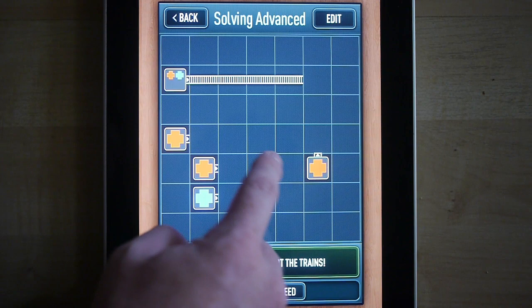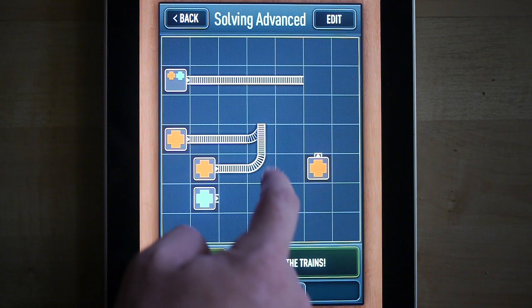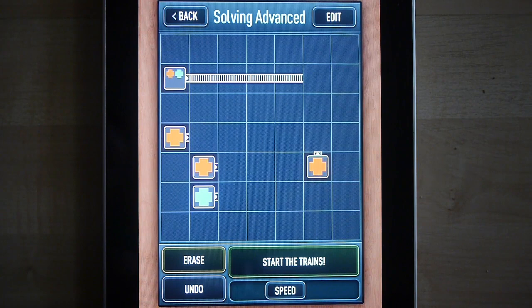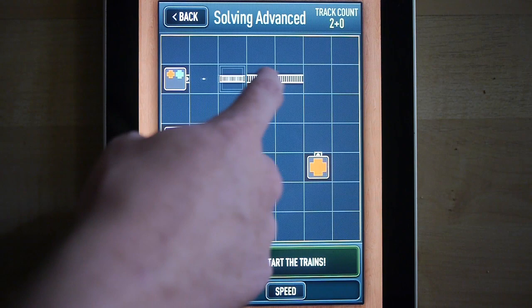Or sometimes players will count the number of squares a train has to travel and try and figure out if it's eventually possible to get it to land on the right square to merge with the train. However, I think there's an easier way to actually figure out which trains are ever going to be able to match and which trains aren't.